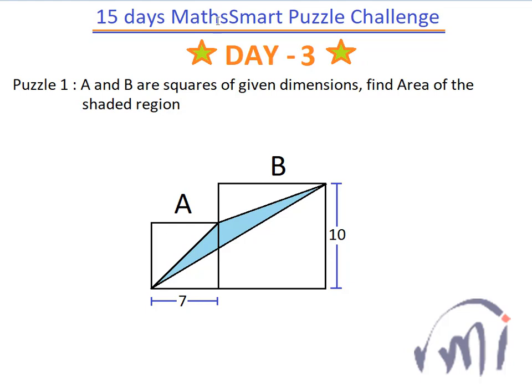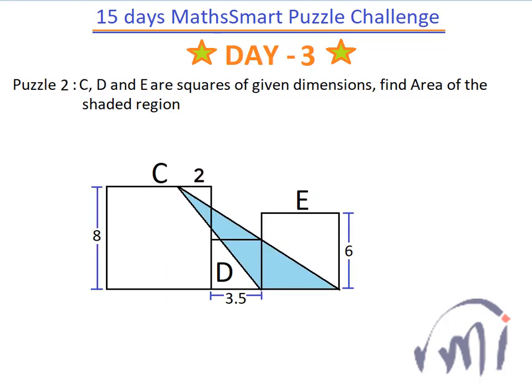This is puzzle number two. Here again, C, D, and E are three squares of given dimensions, and you have to find the area of the shaded region.